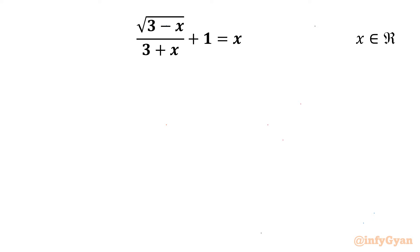Welcome back to Infigyan, my dear friends. In this video we are going to take up one very interesting and challenging radical equation from Math Olympiad. It is: square root of (3 minus x) over (3 plus x), plus 1, equal to x. We have to find out all real solutions.